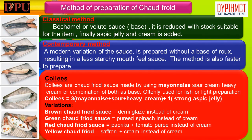Method of preparation of chaud-froid. Classical method: White sauce or velouté sauce is used as a base. It is reduced with stock suitable for the item with which it will be used. Finally it is seasoned and finished with aspic jelly and cream. Contemporary method: It is a modern variation of the sauce, prepared without roux as a base, resulting in a less starchy mouthfeel.